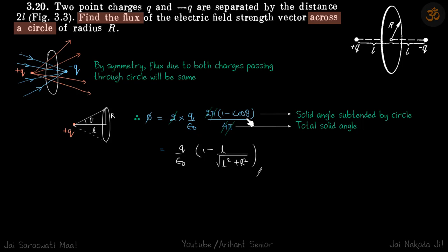Here cos theta will be L upon root of L square plus R square, and the other terms will get cancelled. This should be your answer.